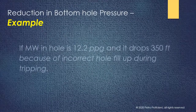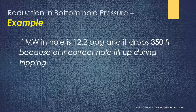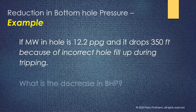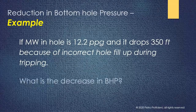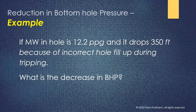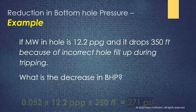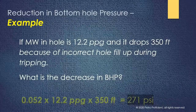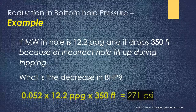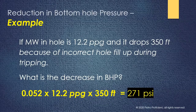To understand the reduction in bottom hole pressure due to incorrect hole fill-up, consider this example: if mud weight in hole is 12.2 ppg and it drops 350 feet because of incorrect hole fill-up, the decrease in bottom hole pressure is calculated as 0.052 × 12.2 × 350 = 271 pounds per square inch.